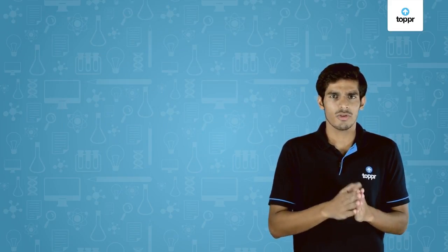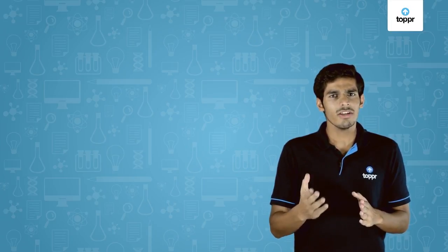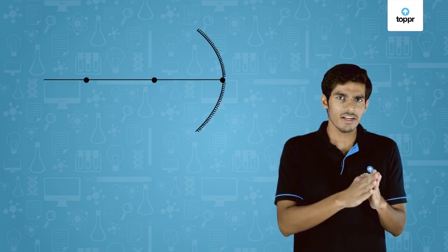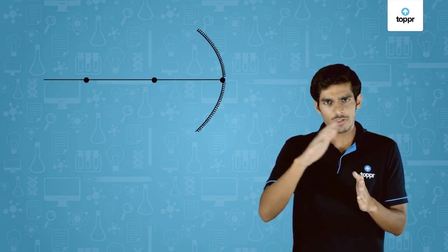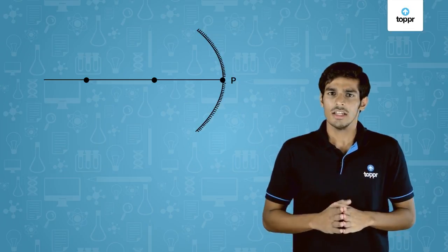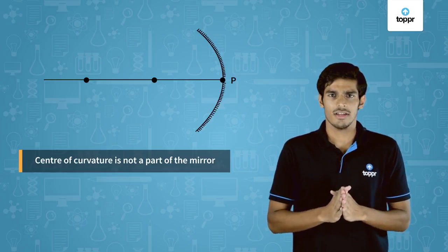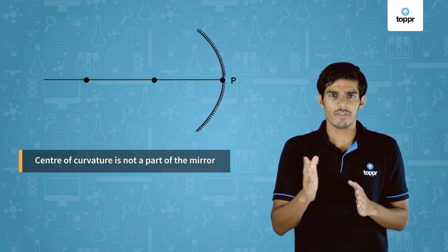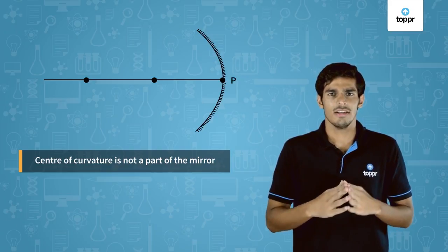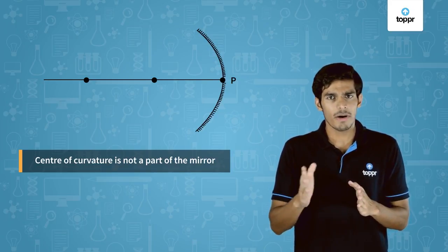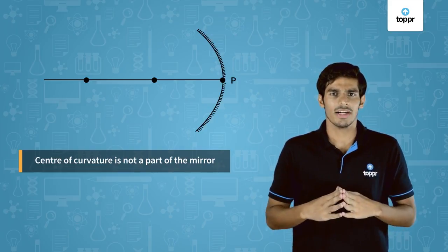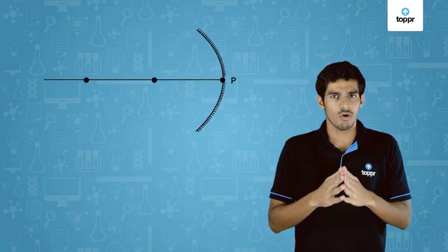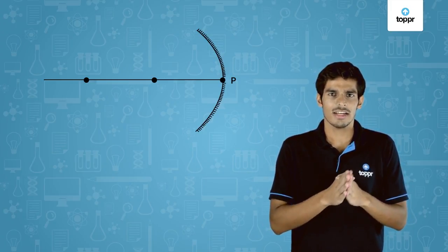Let's have a look at some of the basic terms related to spherical mirrors that will be used in future. The point at the center of the reflecting surface of a spherical mirror is called a pole. It lies on the surface of the mirror and is represented by P. The reflecting part of a mirror is a part of a sphere and every sphere has a center point. This point is called the center of curvature and is represented by C. Note that the center of curvature is not the part of a mirror and lies away from the reflecting surface. The radius of the sphere of which the spherical mirror is a part is called the radius of curvature and it is represented by R.